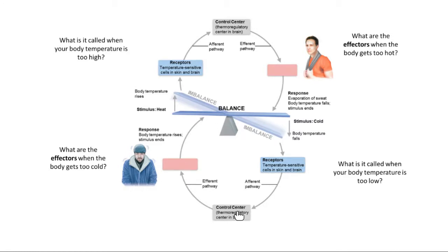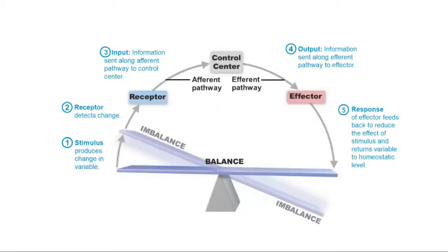This picture showing the general homeostasis arc has a general receptor — anything that detects information — the control center that processes it, and the effector that makes things happen. When we talk about body temperature, we can go above our set point or below it, so we have two ways this arc can work.